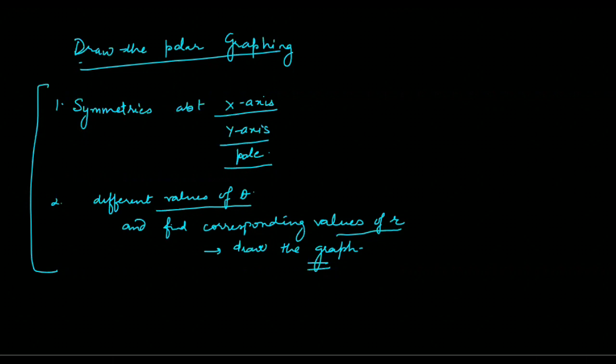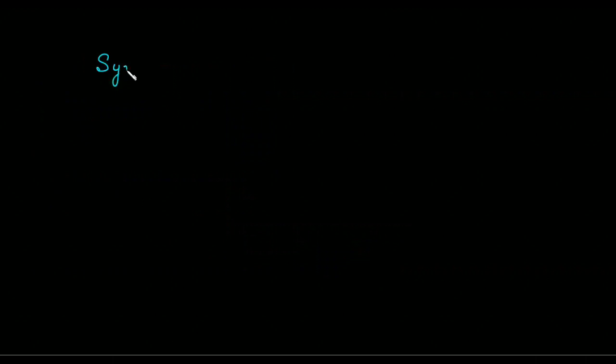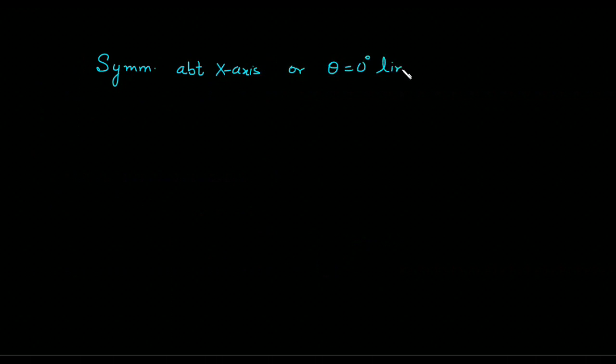Now, first of all, check the symmetry about the x-axis. What do you mean by symmetry about the x-axis? The x-axis, or we can say, the theta equals zero degree line.